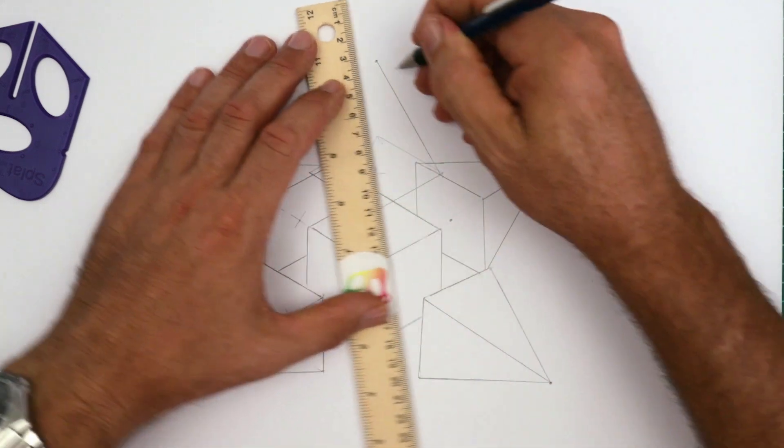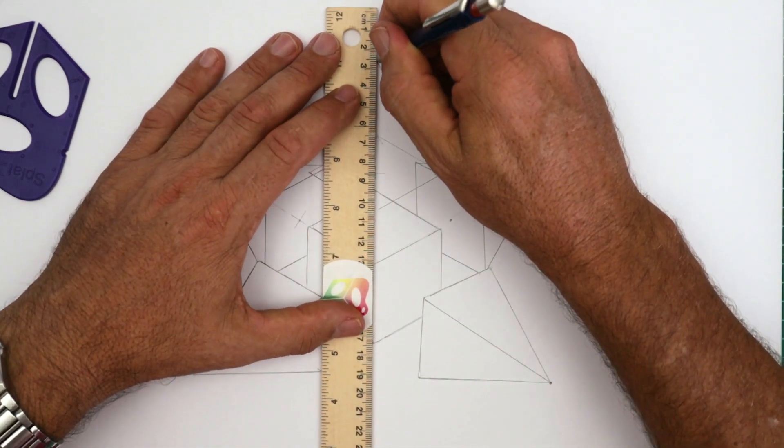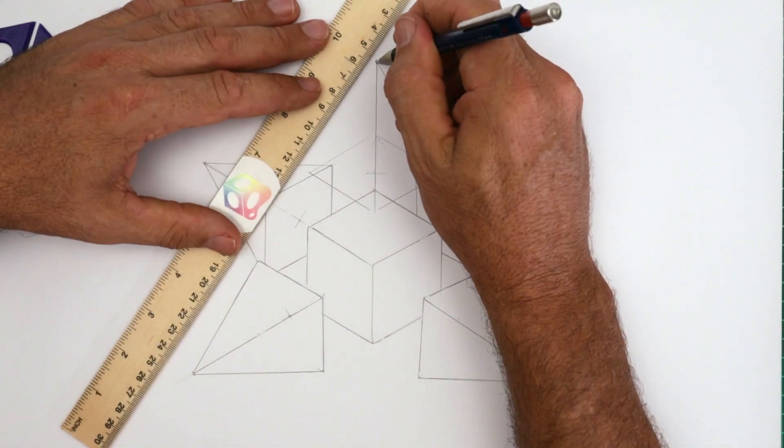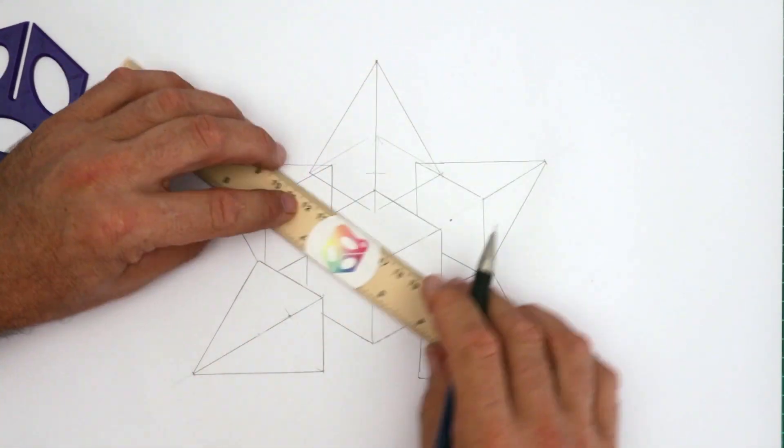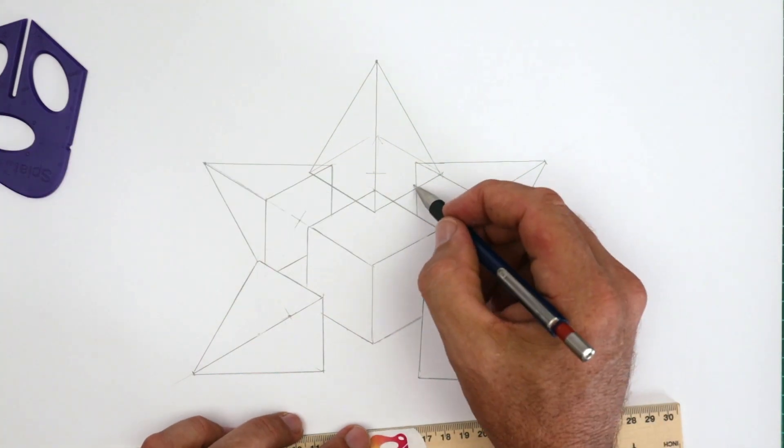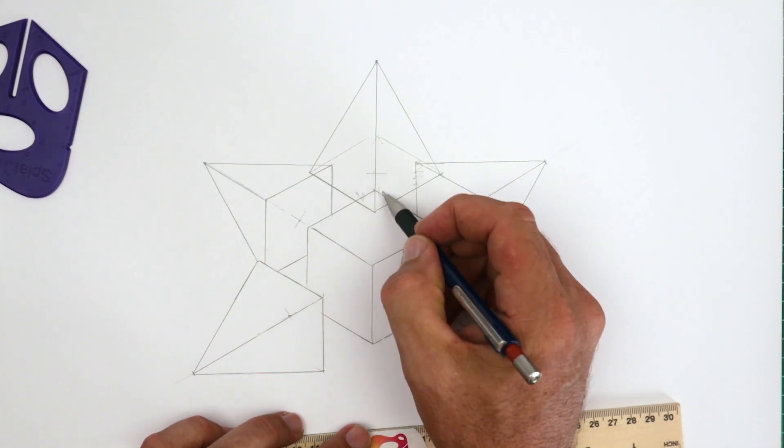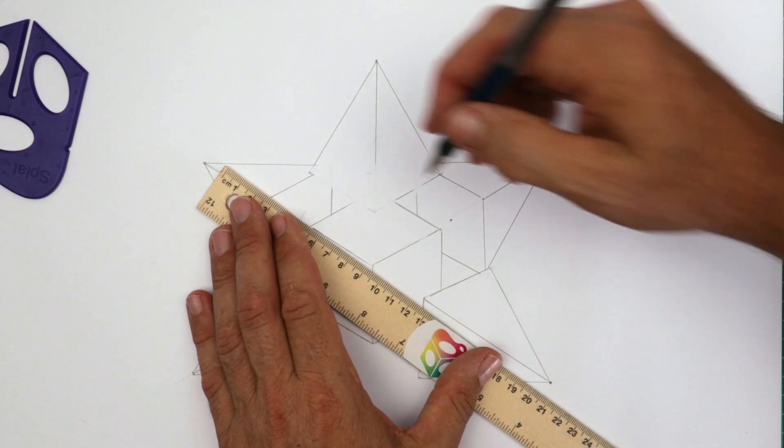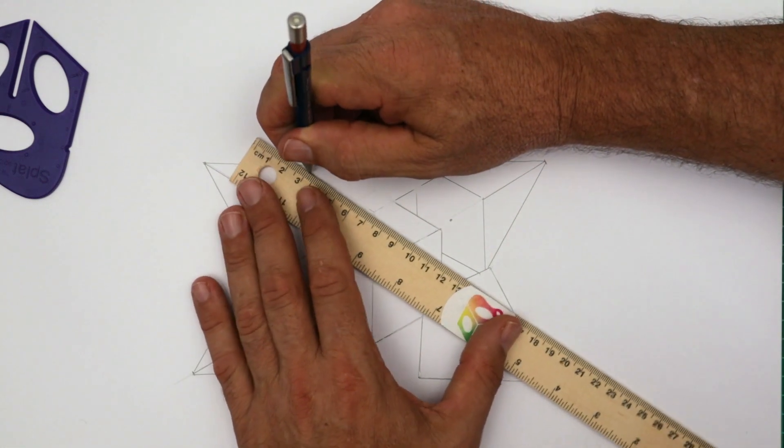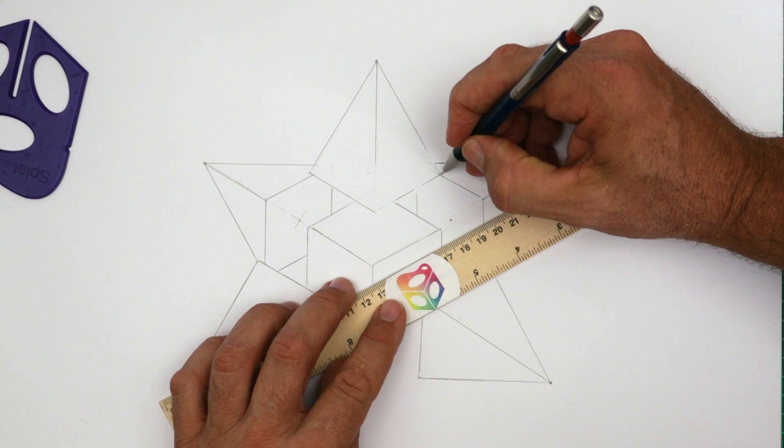And like we've done lots of times before, we're marking in those three lines that join the apex to the base of the pyramid. And now we have a few hidden lines that we're going to erase. Hidden behind that pyramid. And I'm just redrawing in the base there.